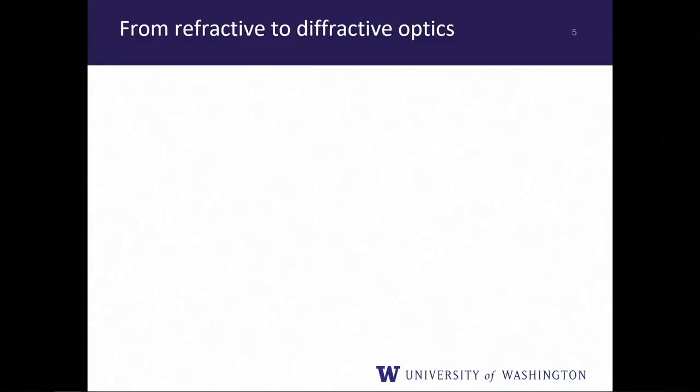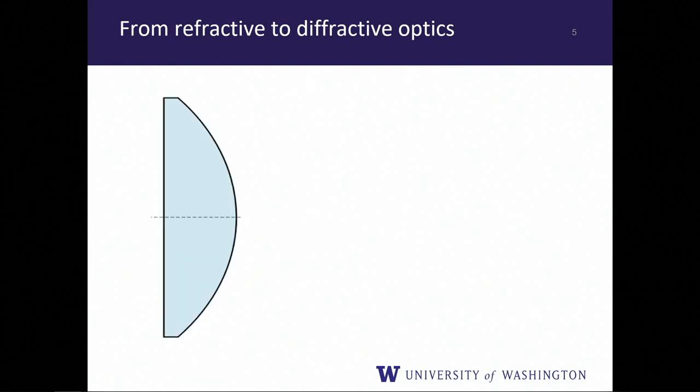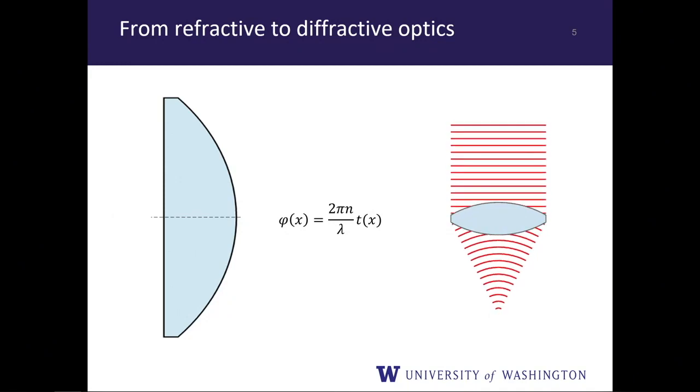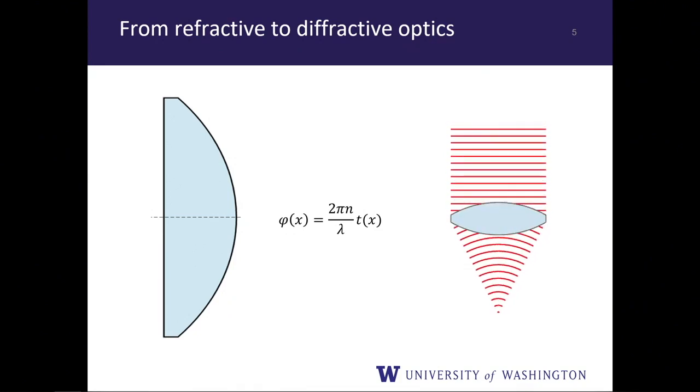To understand diffractive optics, consider going from refractive to diffractive. A lens with refractive index n and spatially varying thickness along x imparts a phase shift of (2π·n/λ)·t(x) on light with wavelength λ. A plane wave incident from the top experiences a larger phase delay at the center and a smaller phase delay at the edges, causing a focusing effect in the far field.